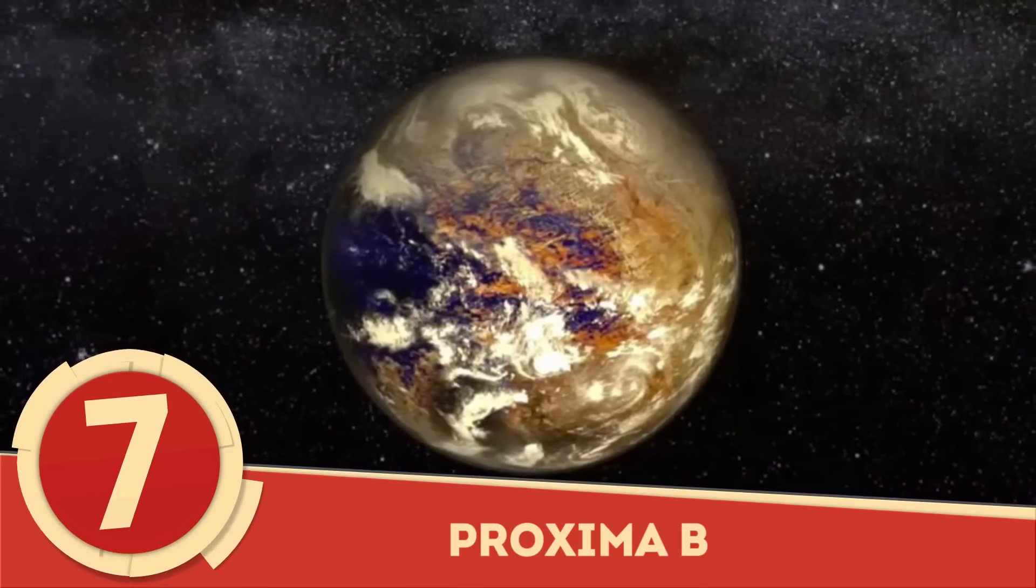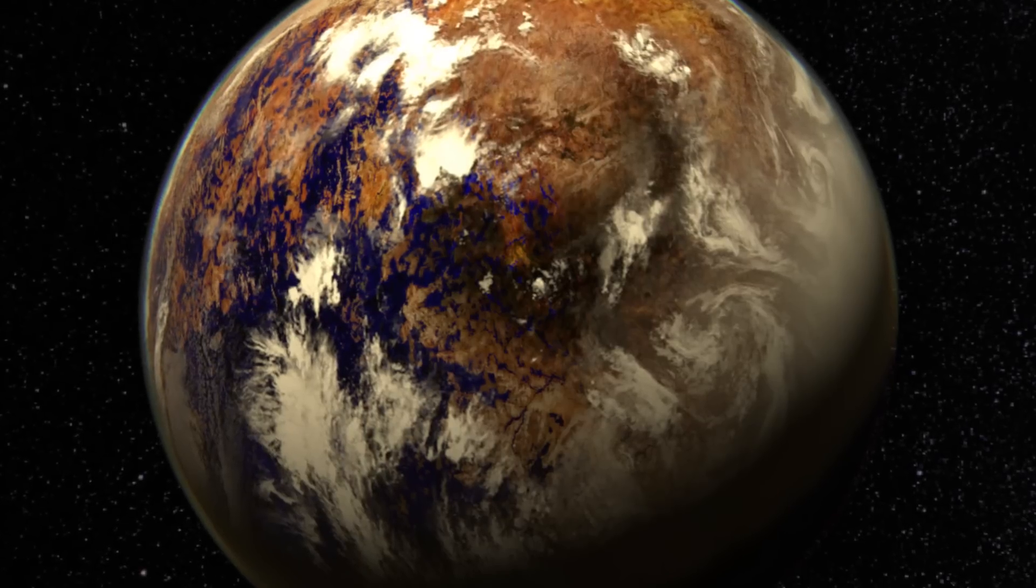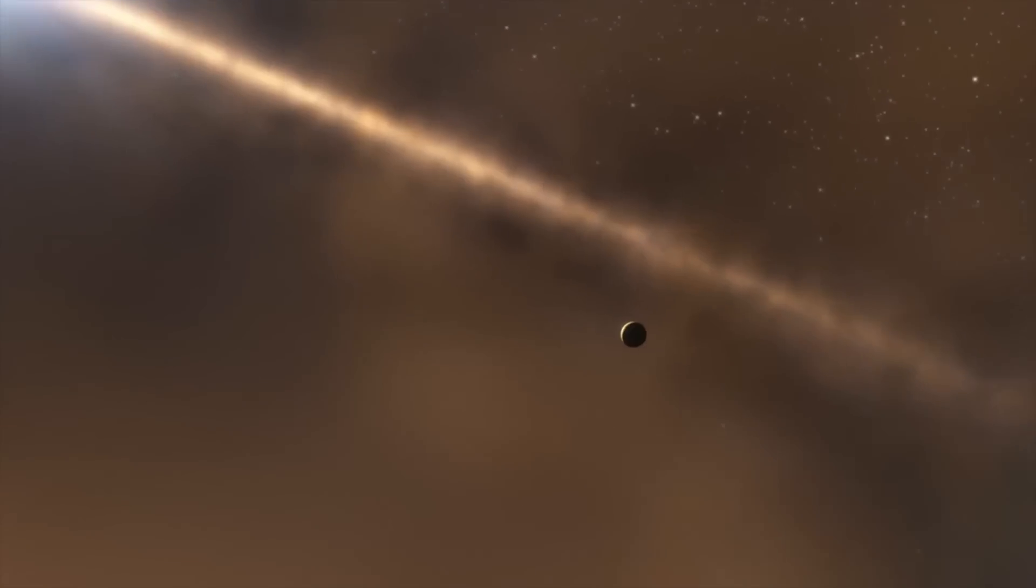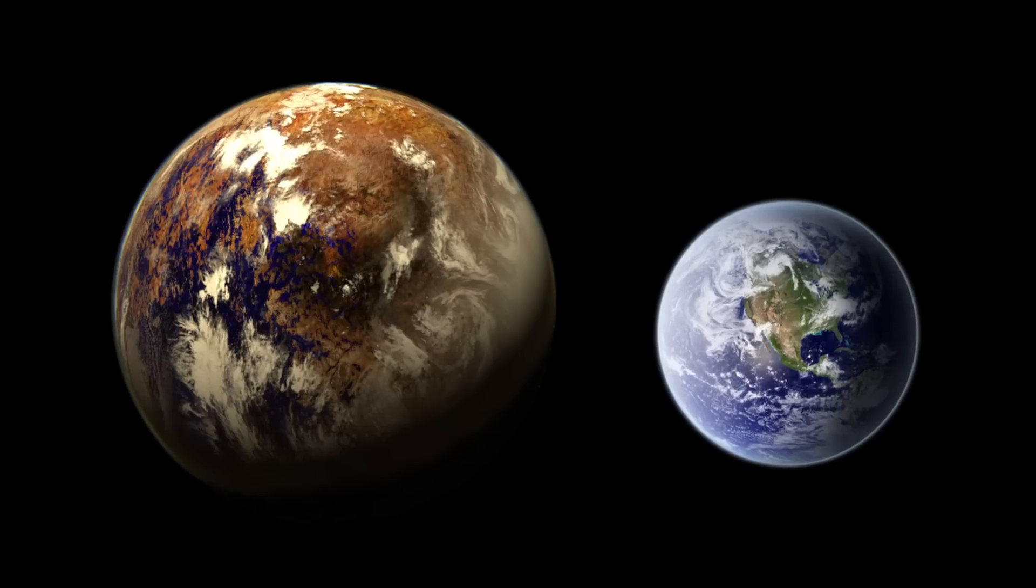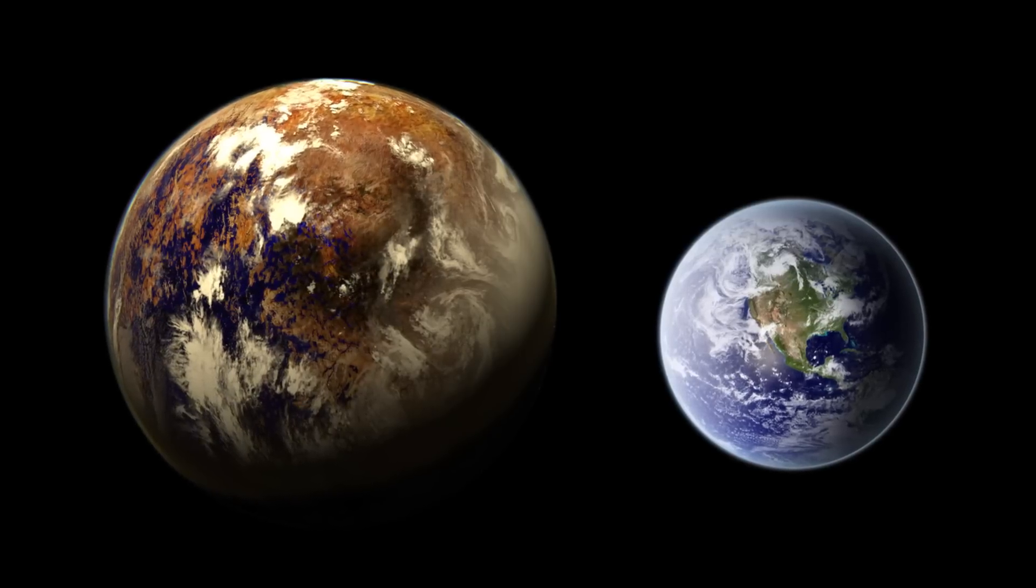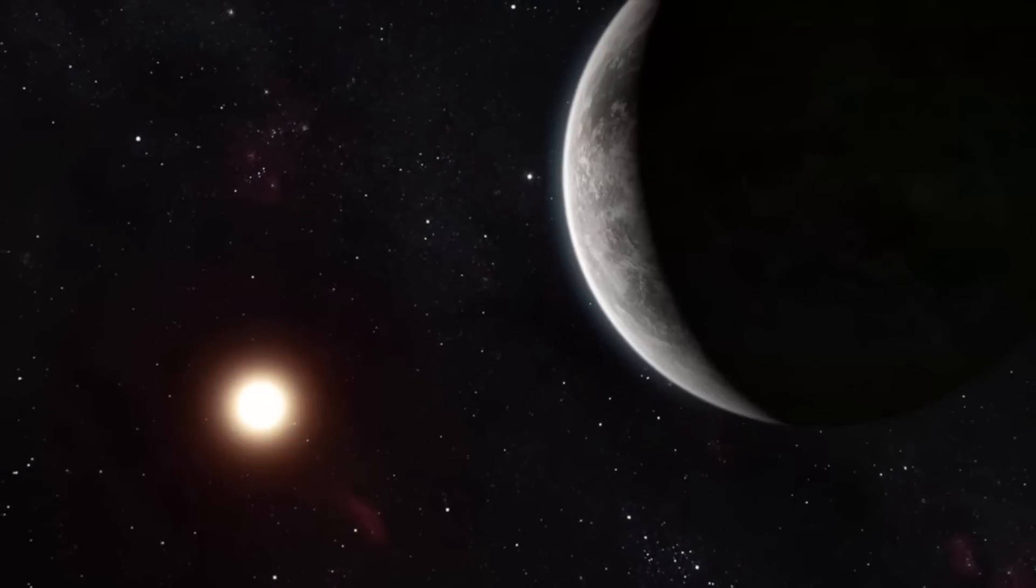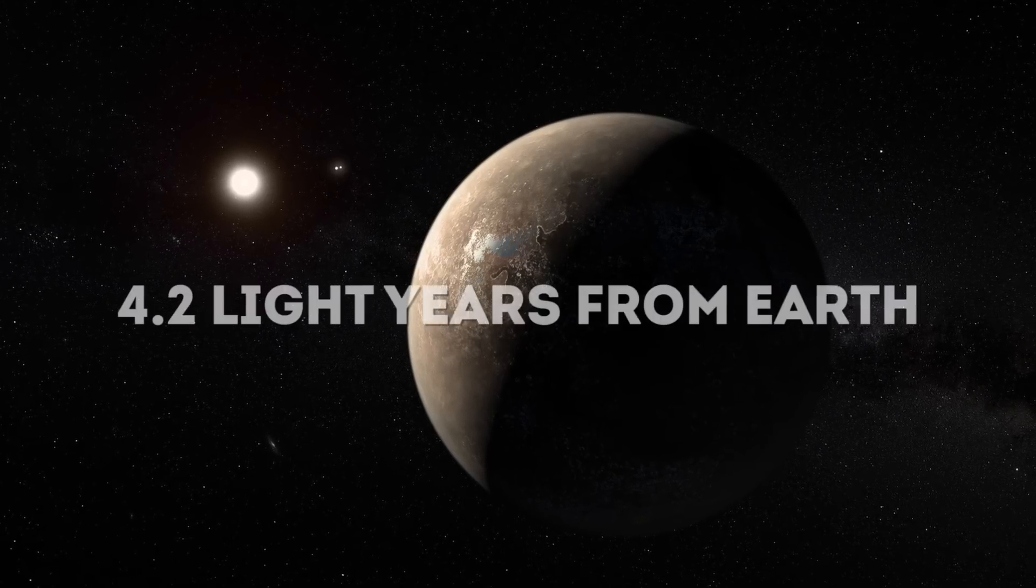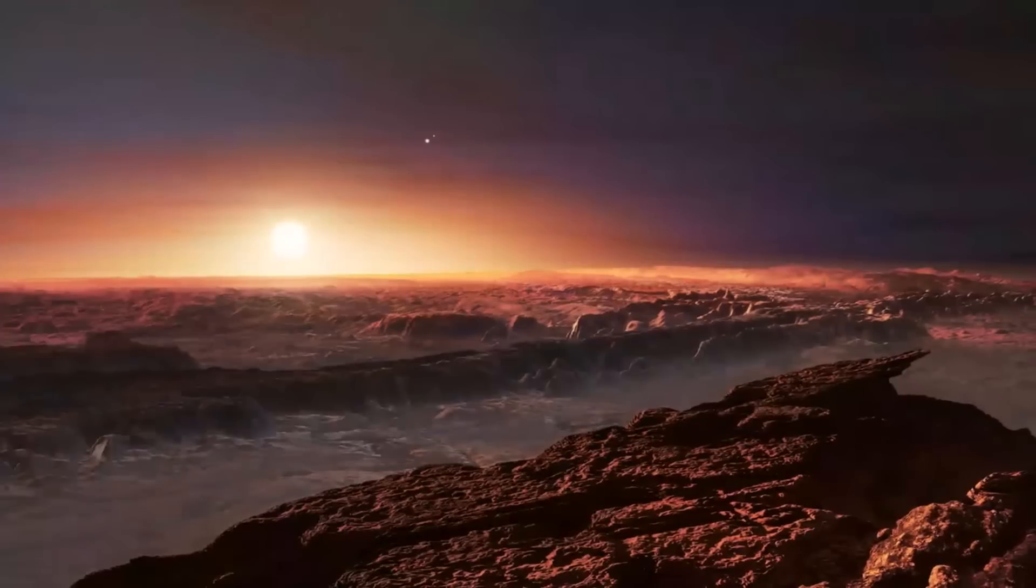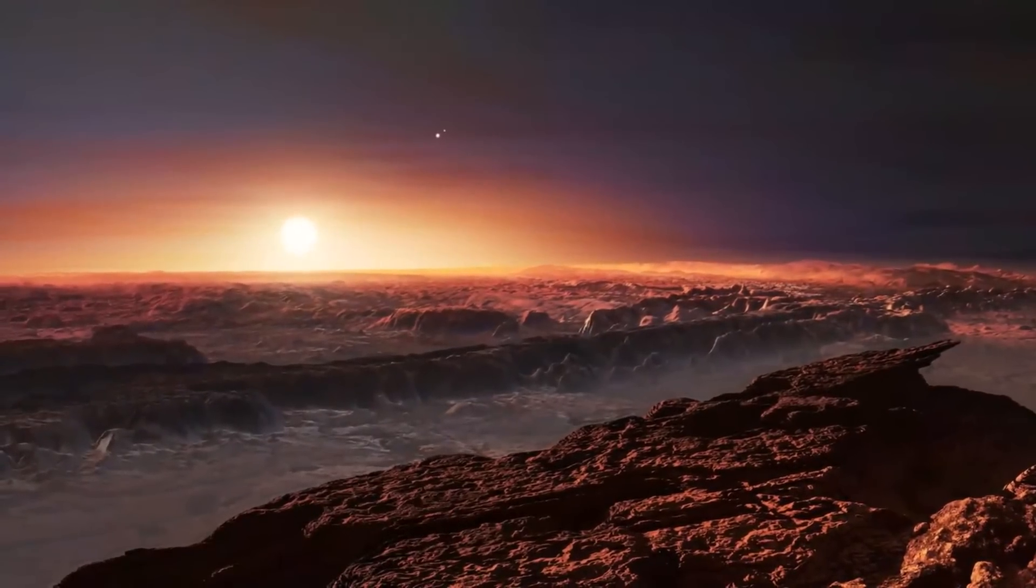Number 7: Proxima b. With an ESI of 0.87, Proxima b may be one of the most Earth-like exoplanets to date, but that doesn't mean it's the greatest candidate for habitability. Though it shares many characteristics with Earth and touts a higher ESI, if you haven't noticed yet, that's not a guaranteed proponent of habitability. In fact, Proxima b, which is only 4.2 light-years away, is likely unhabitable due to incredibly high stellar wind pressures.